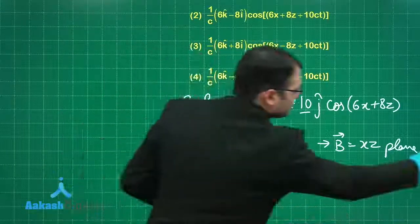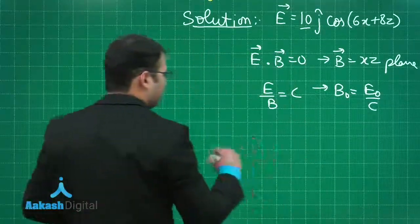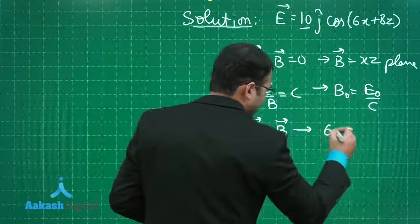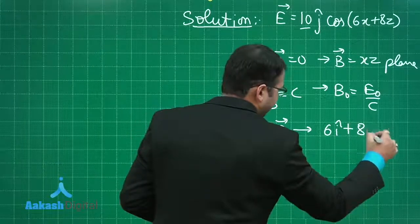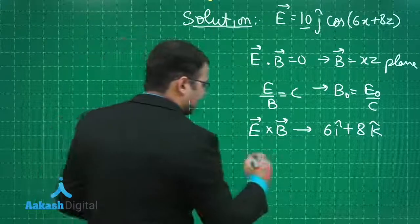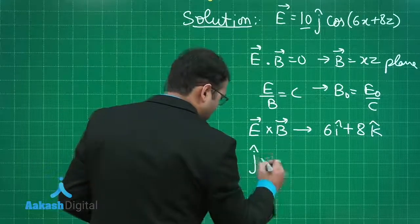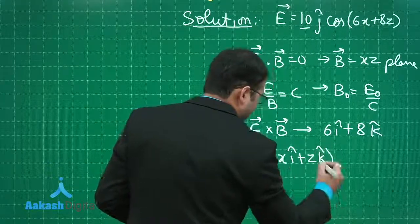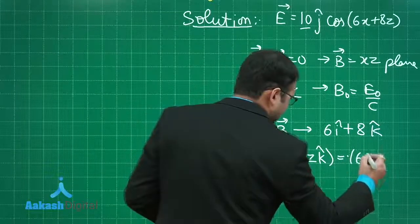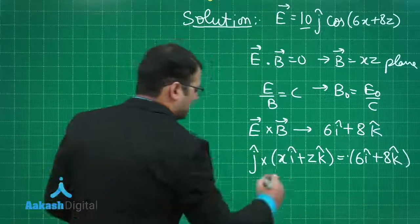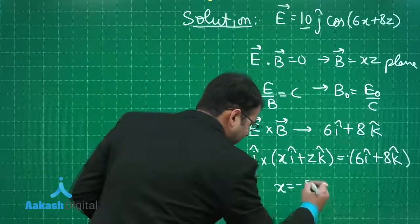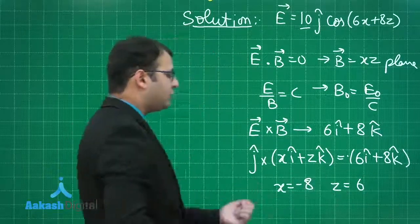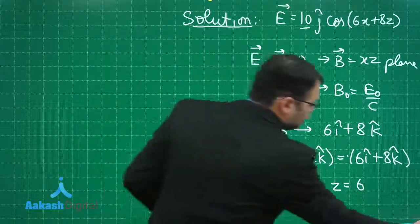The direction of this magnetic field should be such that E cross B should be in line with 6 i cap plus 8 k cap. From here I will say that j cap cross product of X i cap plus Z k cap should be 6 i cap plus 8 k cap. From here you will find that X would be equal to minus 8 and Z will be equal to 6. We have found the X component and Z component, and the magnitude is 10.